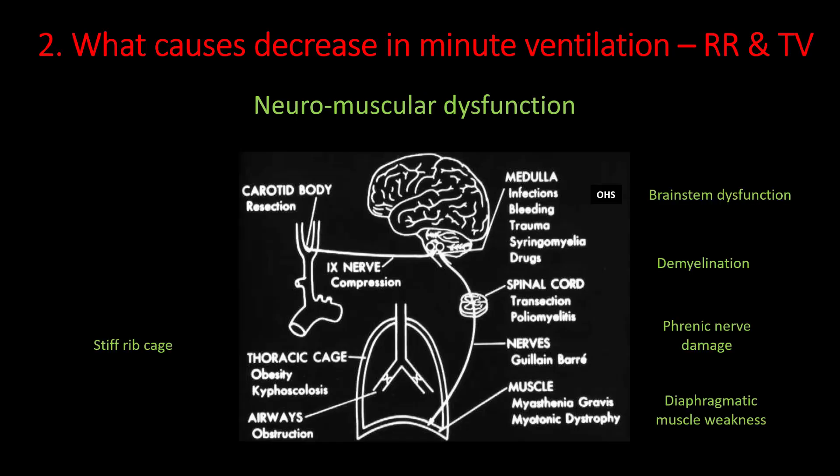Decreased minute ventilation is observed in patients with neuromuscular dysfunction. The common causes are brainstem dysfunction, demyelination, phrenic nerve damage, diaphragmatic muscle weakness, and stiff rib cage. Opiates are possibly one of the commonest medications that suppress your respiratory center and cause a decrease in minute ventilation. Other sedatives and medications are also implicated.